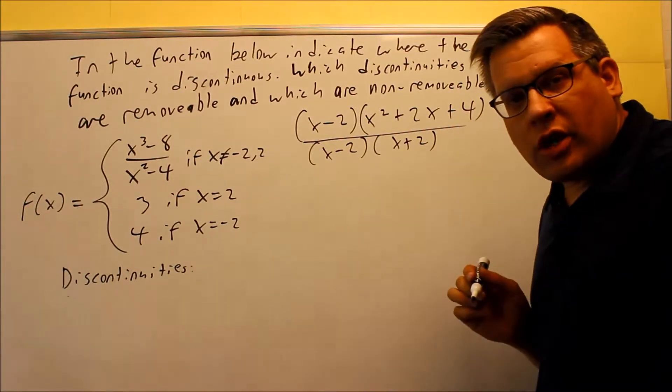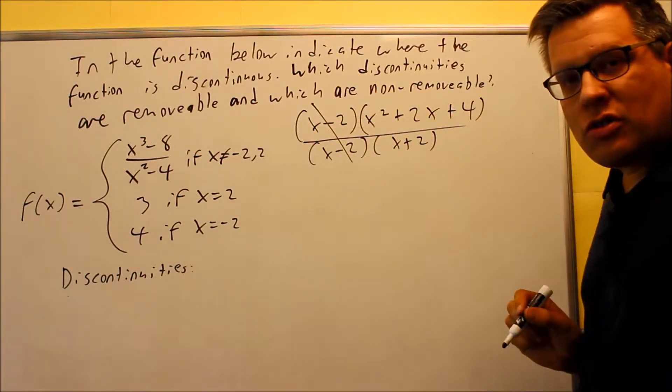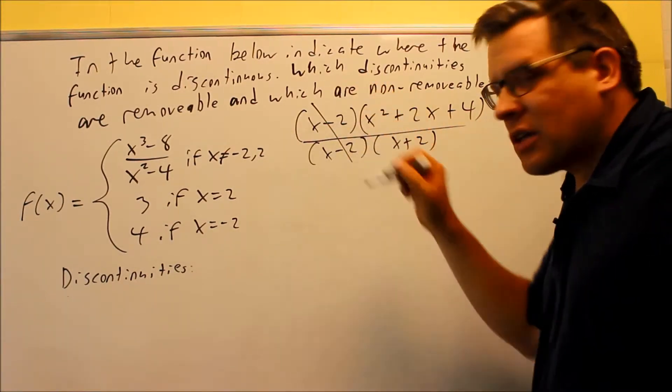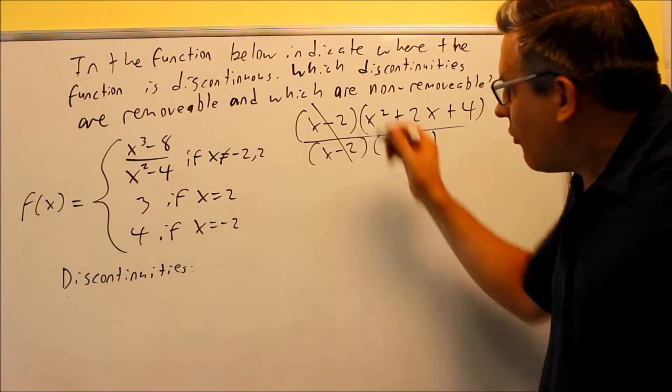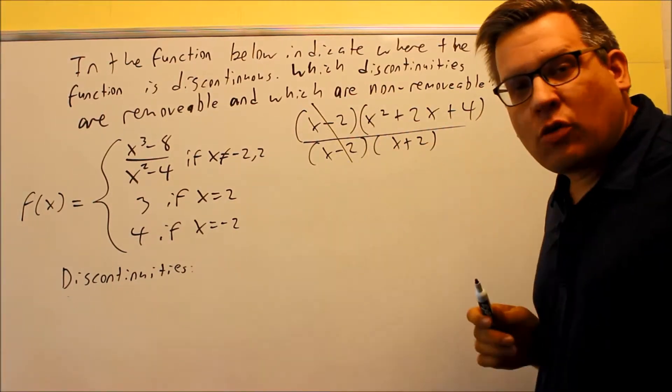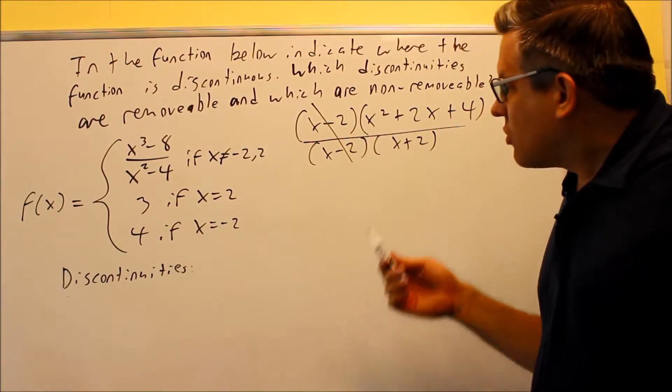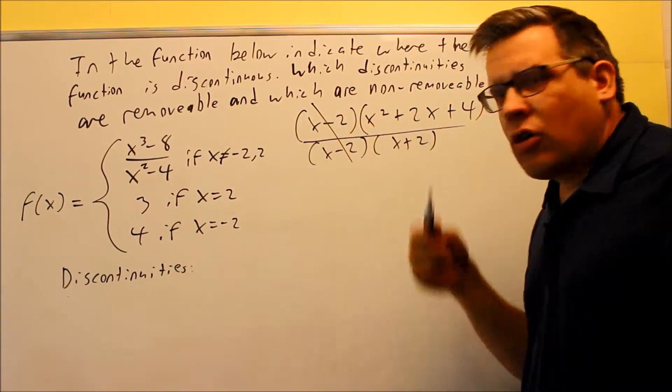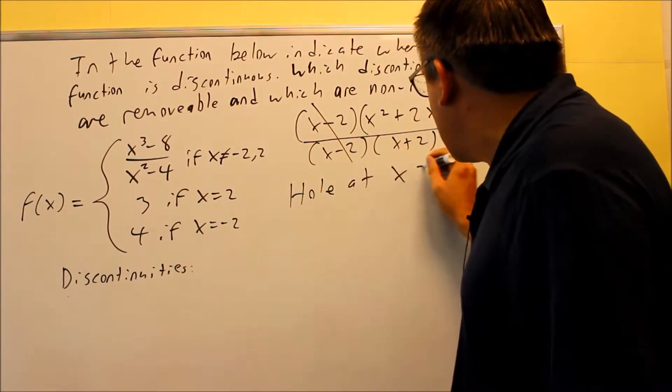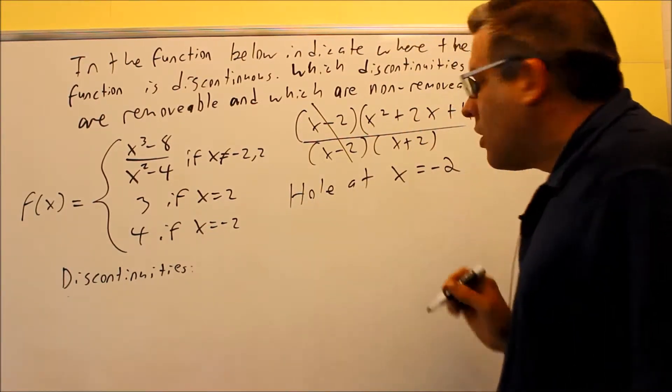What I notice right away from this is that the x minus 2s are going to cancel. Anytime you have that situation happening where you can cancel out a factor like that from the top and the bottom, whatever actually makes that one equal to 0, that's going to automatically be a hole. So right now, I know that there's going to be a hole. So I have a hole at x is equal to 2.